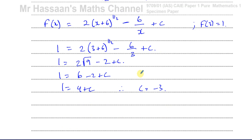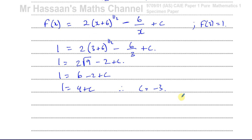One thing some people get confused about: the square root symbol means the positive square root of whatever's inside — it's not written as plus or minus. So 9 to the power of a half is only 3, not negative 3. When you're asked to find the square root of 16, the answer is 4. If you want both positive and negative, you'd write plus or minus 4. Without that notation, it's just the positive square root.